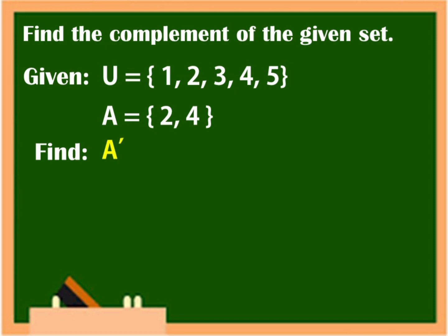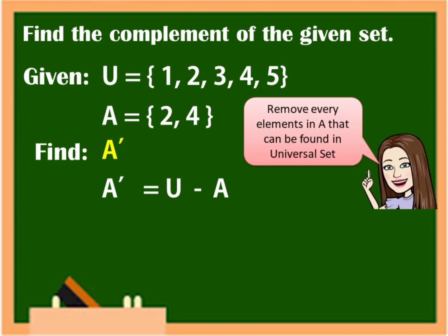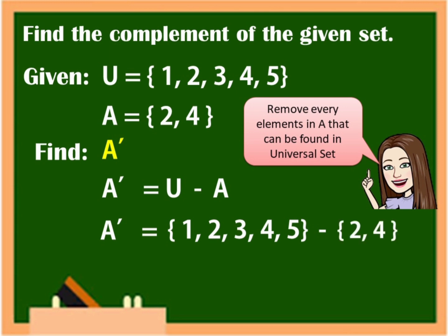To get A complement, we are going to remove all the elements in A that can be found in the universal set. So, A complement is equal to U minus A. The elements in U are 1, 2, 3, 4, 5 minus the elements in A, which are 2 and 4. So, now we are going to remove 2 and 4.